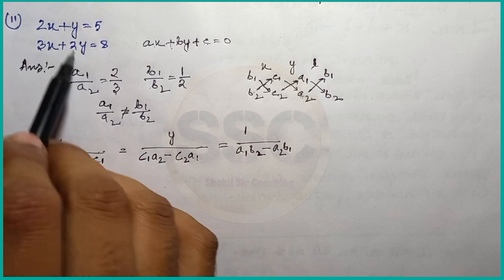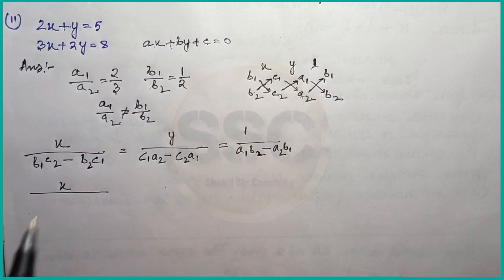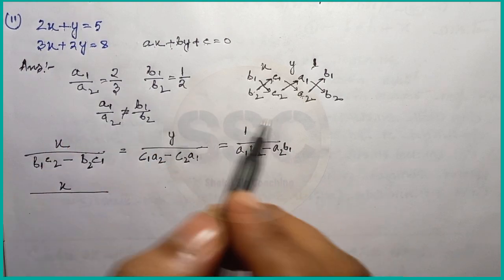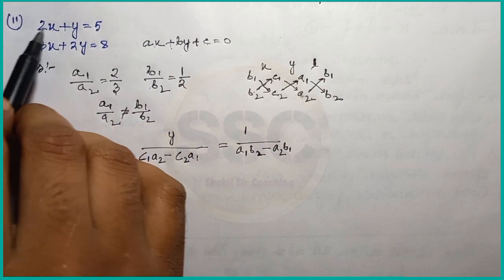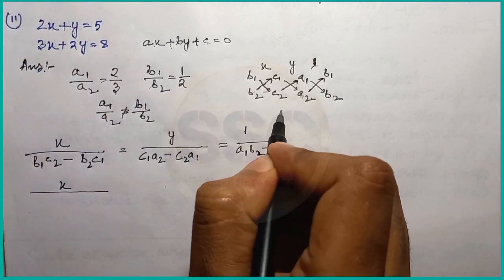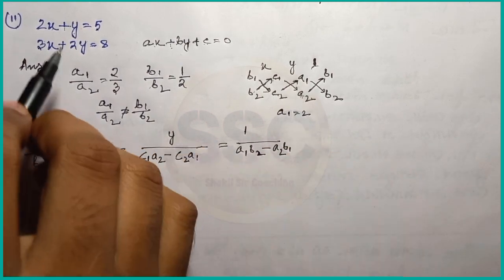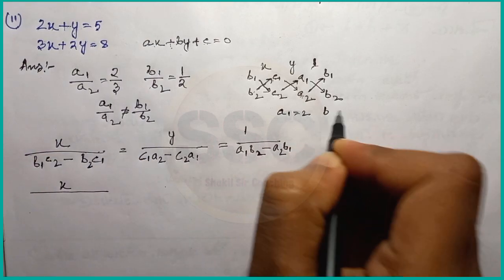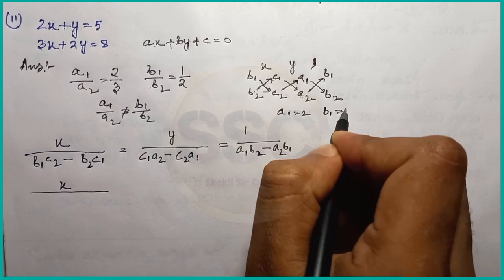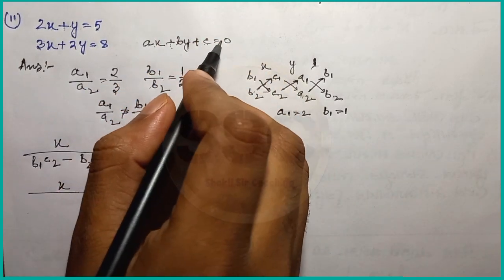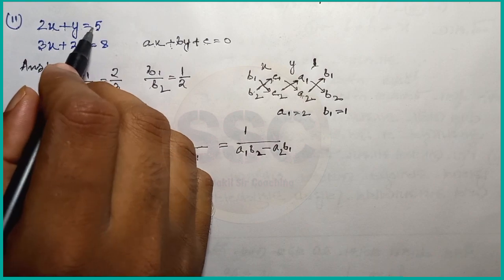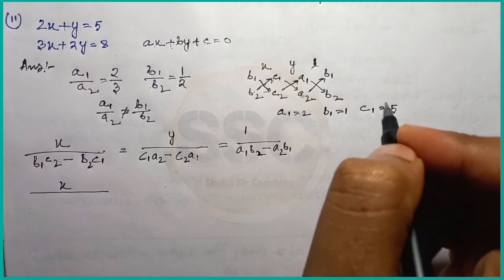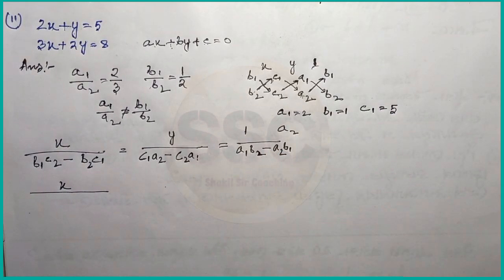So the value of b1-c1 — first, the way I use a1 is 1, the second task is 2. B1 is 1, C1 is minus 5. Then we have A2, B2, C2 next.